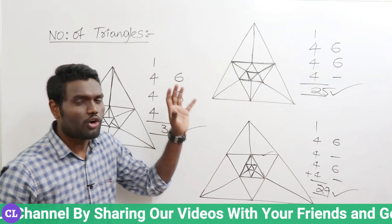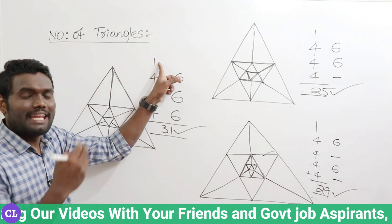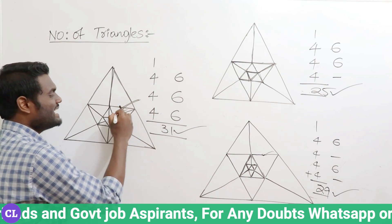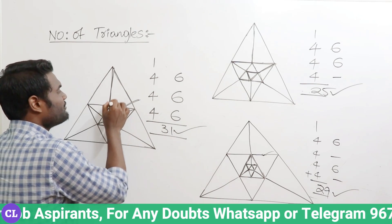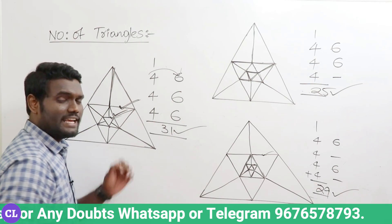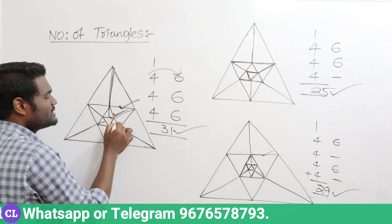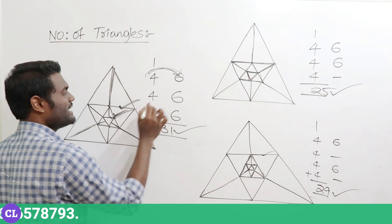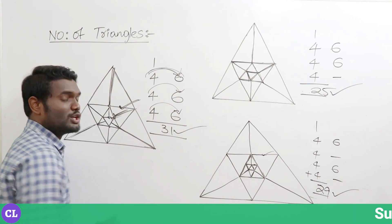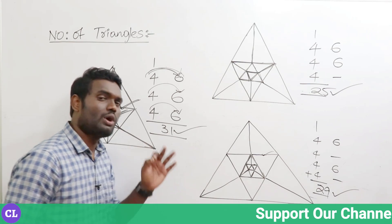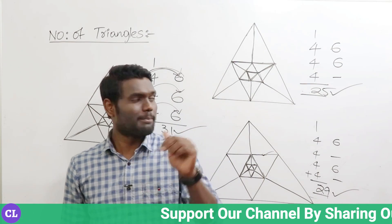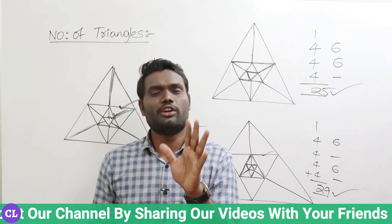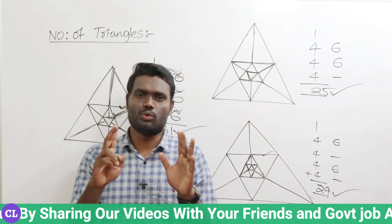So whenever you have a format like this, it is simple: for the bigger triangle write one; the number of triangles inserted inside — write that many fours. Here three triangles are inserted so write three fours. If extensions are present, for each four with extension you write an additional six. For each four without extension you do not write six. Add them all up and you have the total number of triangles in the figure. Practice this once and counting triangles will be really simple.